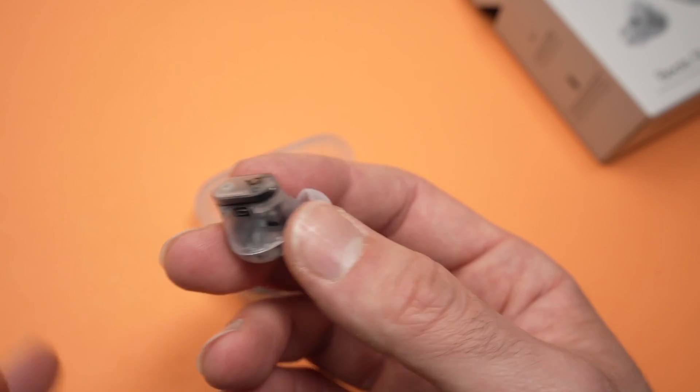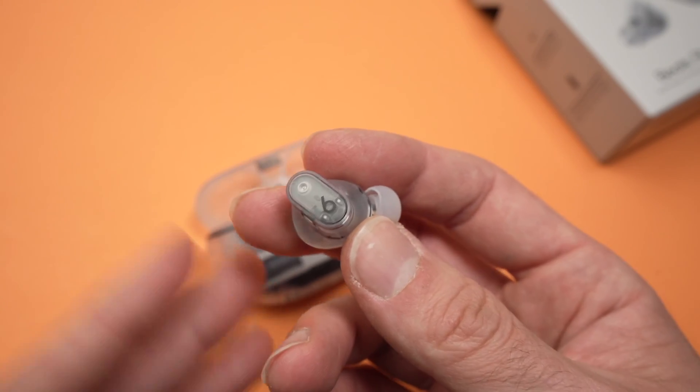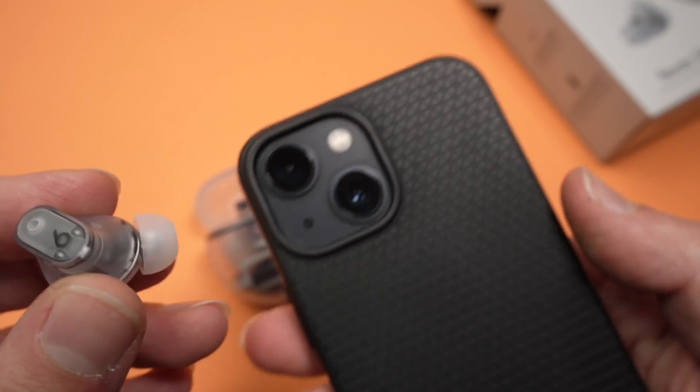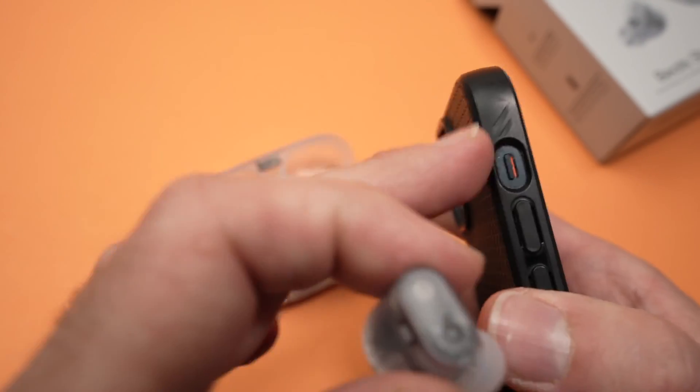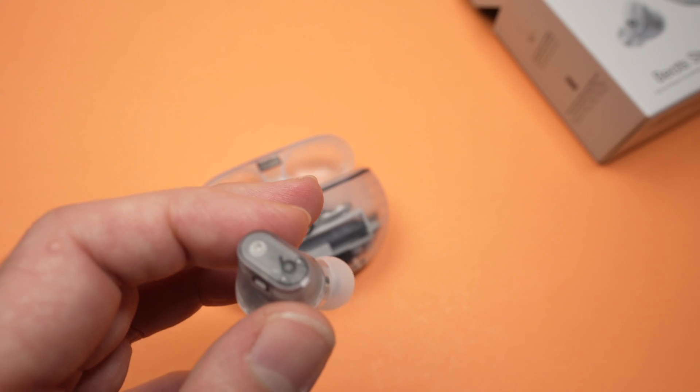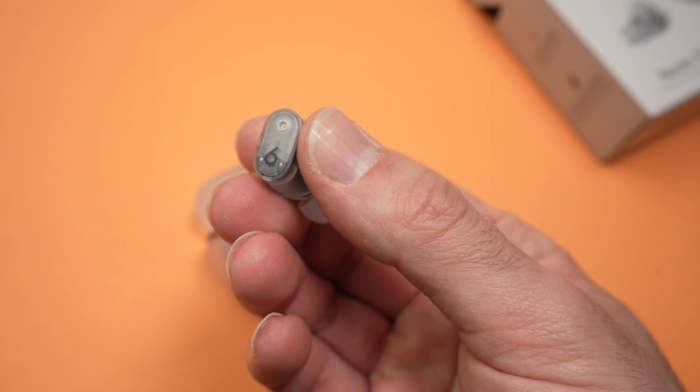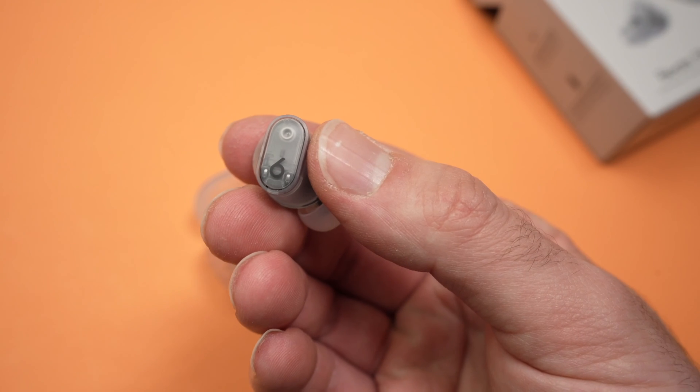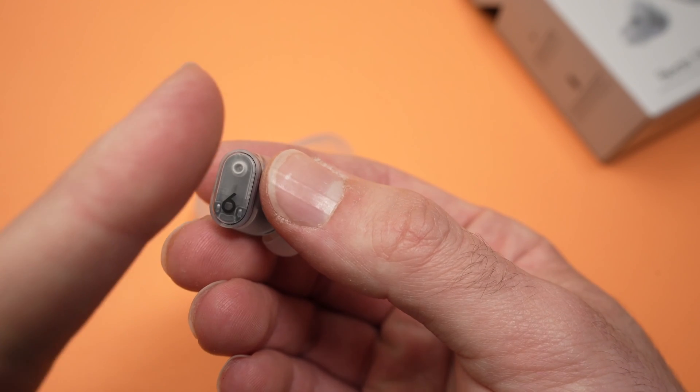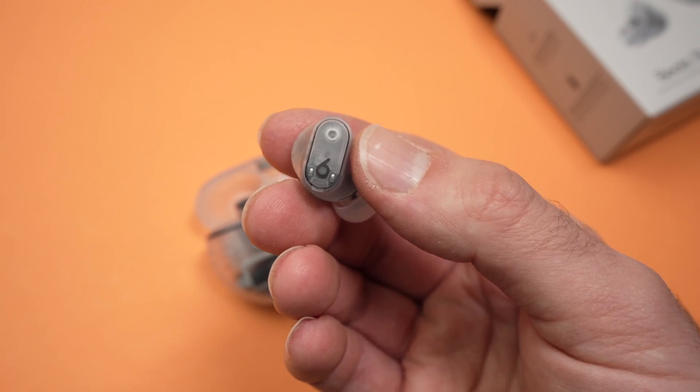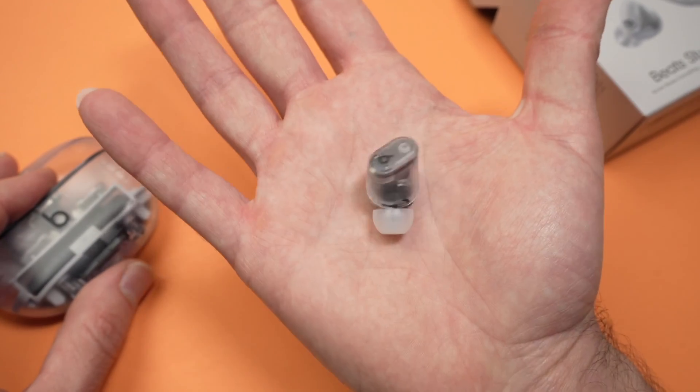If somebody is calling you and you've answered and you're talking to this person and you want to switch between these earbuds and your iPhone, so you take the call on your iPhone instead, you can press twice on this button while the call is outgoing to switch between the earphones and send the call to your iPhone instead.